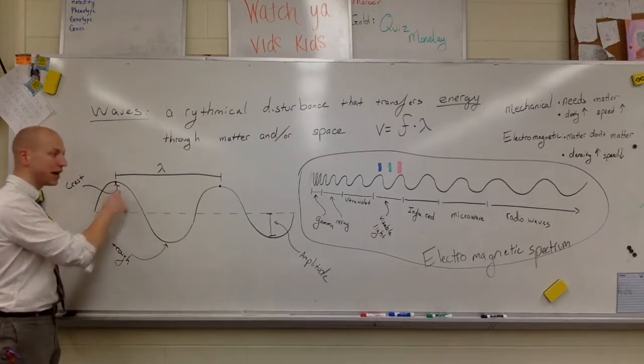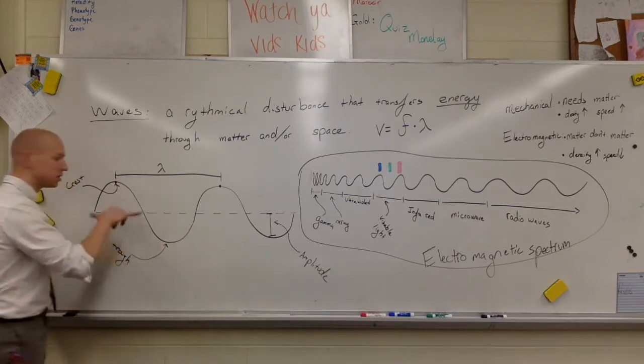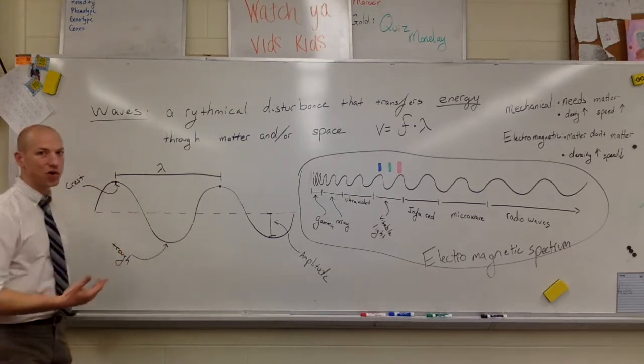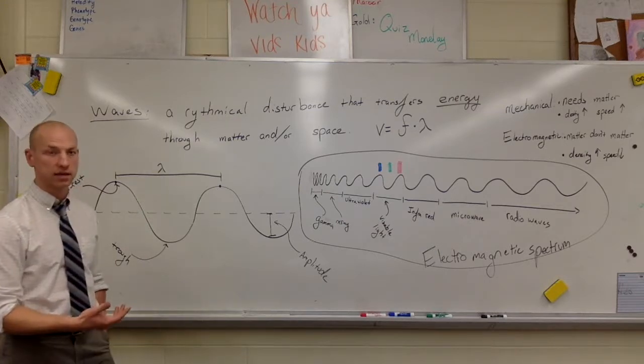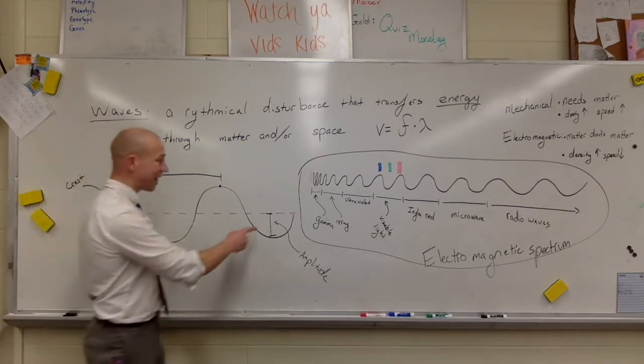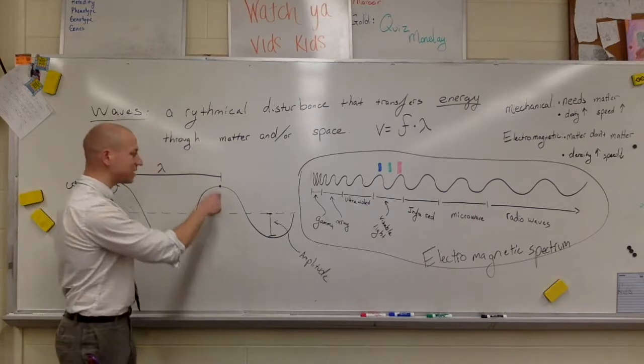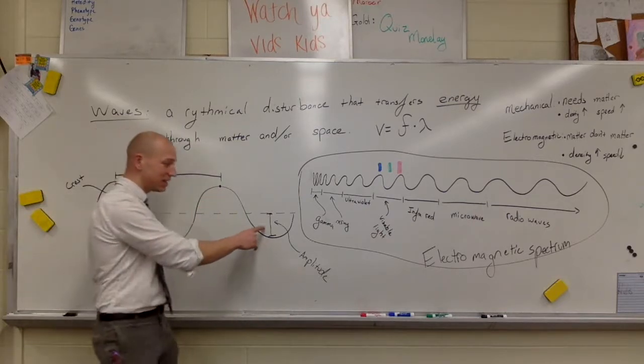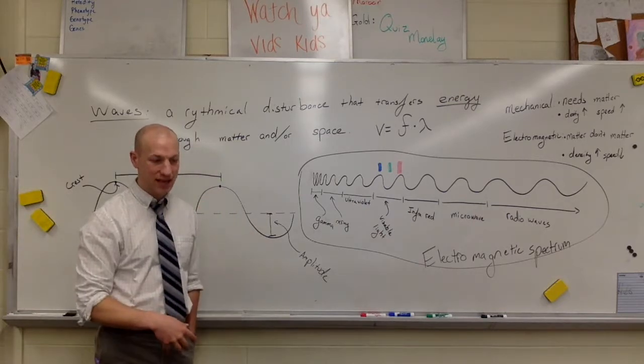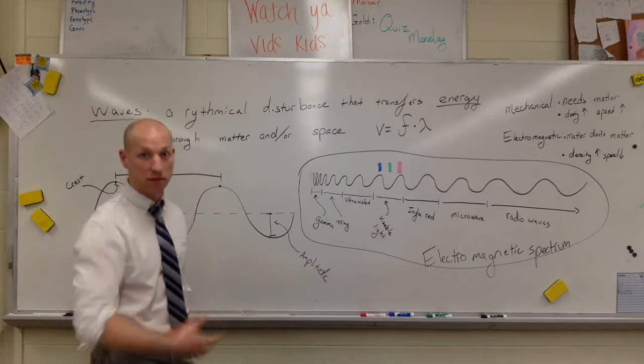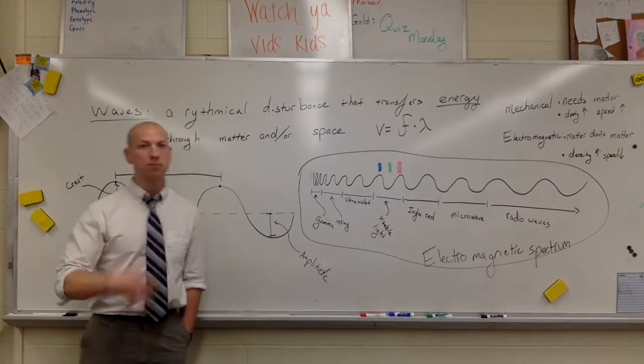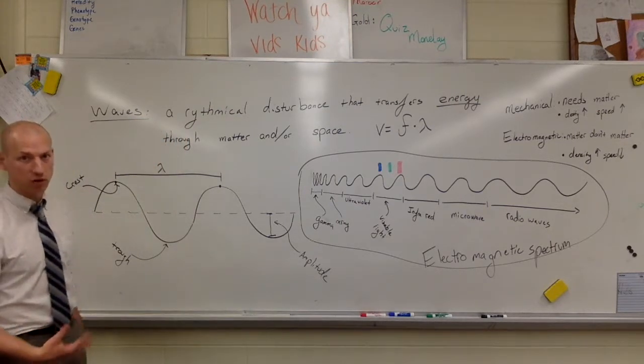We've got a wavelength, which is the difference in space between any two similar points in the wave—for example, the two highest points, the two lowest points, two points from the midpoint. Those are all dictating wavelength. We've got amplitude, which is the height of the wave, and this actually is what carries the energy of each individual wave. The bigger the amplitude for the wave, the more energy that particular wave will carry.